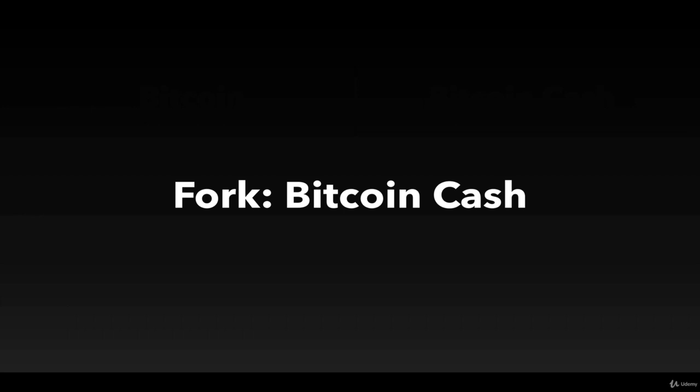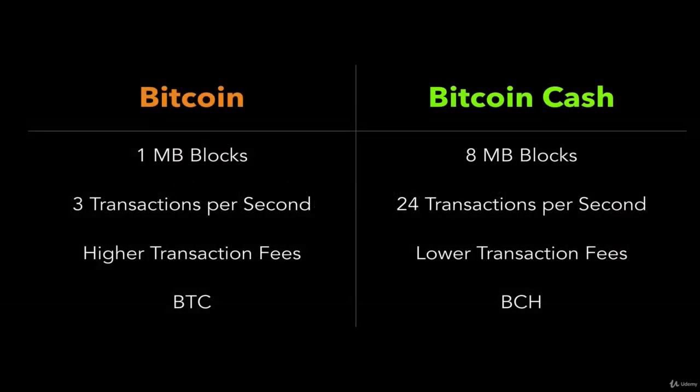Roughly at the same time as all the drama was happening with SegWit and its attempts at increasing the size of blocks, there was a group of people working on basically an alternate version of Bitcoin. Rather than taking the approach of upgrading miners in what's called a soft fork — making it backwards compatible — the idea behind Bitcoin Cash was to just split off from the Bitcoin network and make an entirely separate cryptocurrency, basically the same except for a couple pieces.